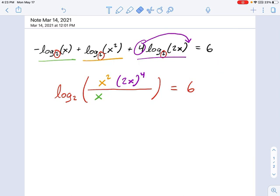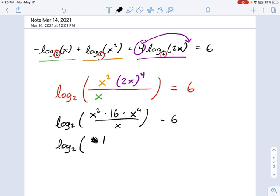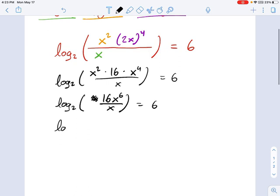Now, we have everything written in this big argument here. We can just go ahead and start simplifying. So this is going to be log base 2 of, well, x squared on top and 2 to the fourth power, that's times 16. And then times x to the fourth, all divided by x equals 6. And you can see there's some things in here that are going to simplify. Let's just do that one step at a time. x squared times x to the fourth, that's x to the sixth. It's going to be 16x to the sixth divided by x. And x cancels out from both of those. So I get log base 2 of 16x to the fifth equals 6. And that's about as simplified as I can make this.